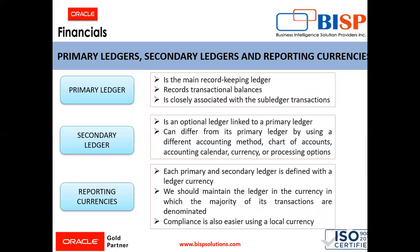There must be a separate primary ledger for both countries. The secondary ledger is an optional ledger which we can create to link to the primary ledger, and it can differ from its primary ledger by using a different accounting method, chart of accounts, accounting calendar, currency or processing option. Secondary ledgers are linked with the primary ledger but only for the purpose of tracking and alternative accounting. For example, if there is a primary ledger using GAAP principles, you can have a secondary ledger linked with it for the IFRS accounting requirement.